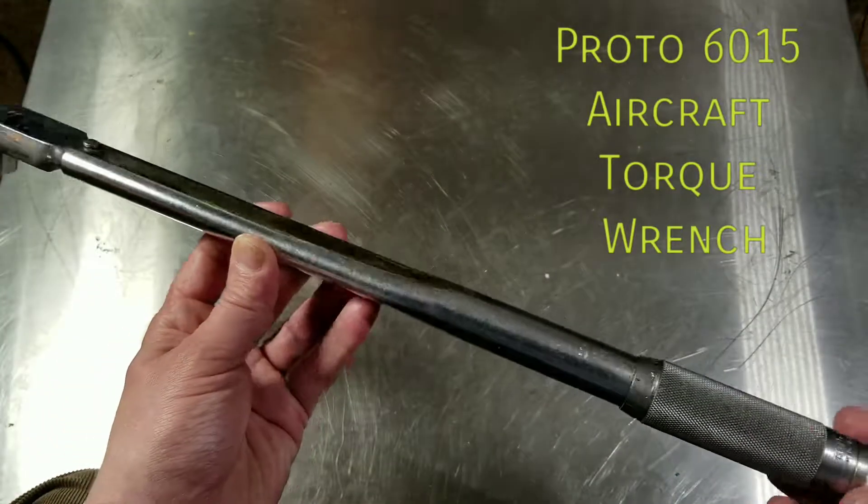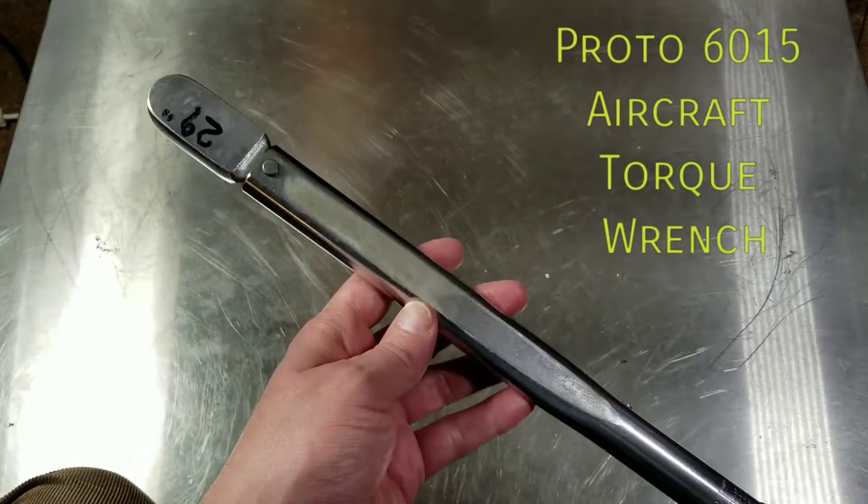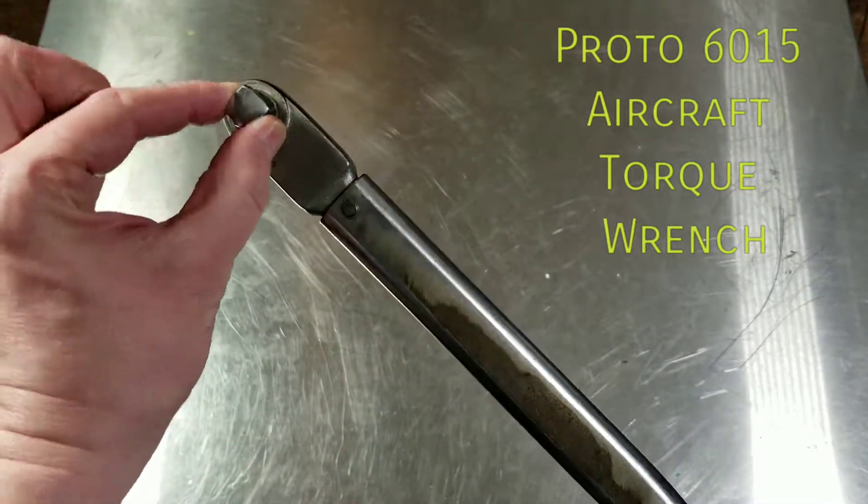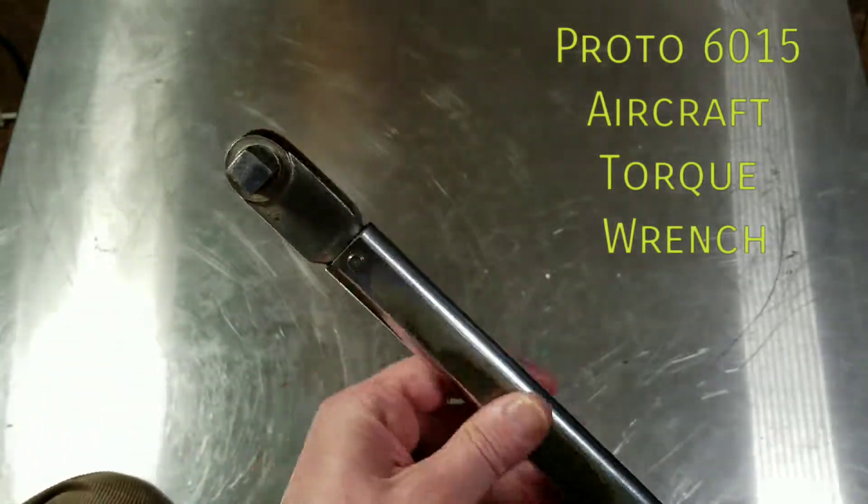Caddis Maximus here, this time with a quick review of a Proto aircraft torque wrench. This would be a fixed head torque wrench. There is no ratchet, as you can see. The head is extremely small, and that's why they're known as aircraft.